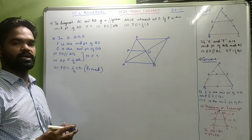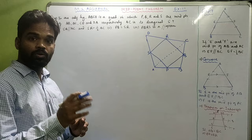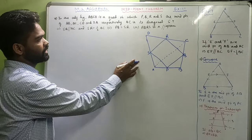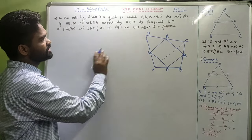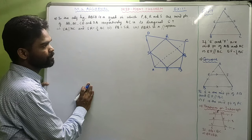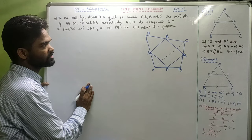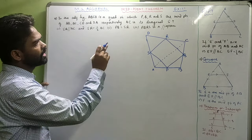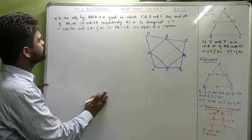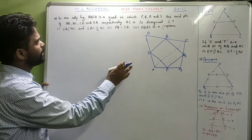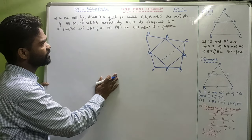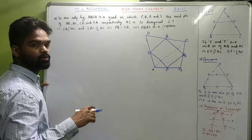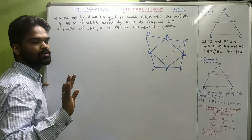Now look at sum number 5. In the adjoining figure, ABCD is a quadrilateral in which P, Q, R, S are the midpoints of the sides respectively. AC is the diagonal. Show that SR is parallel to AC, SR is half of AC, PQ equals SR, and PQRS is a parallelogram.